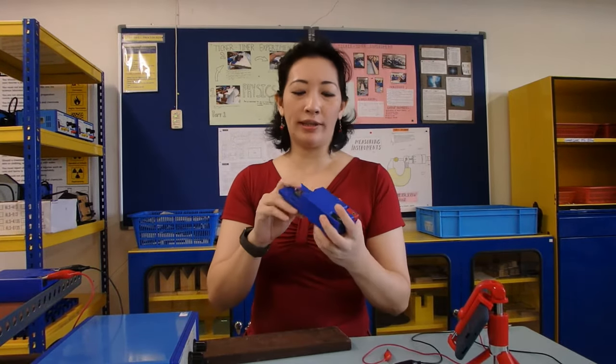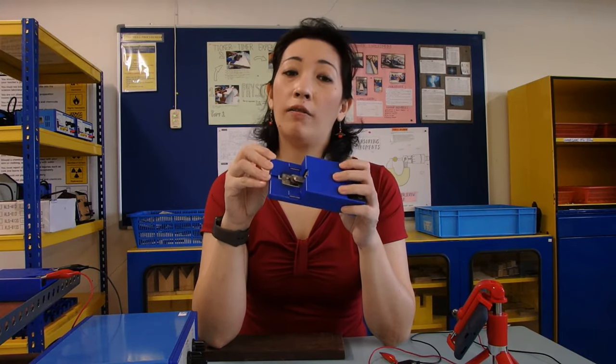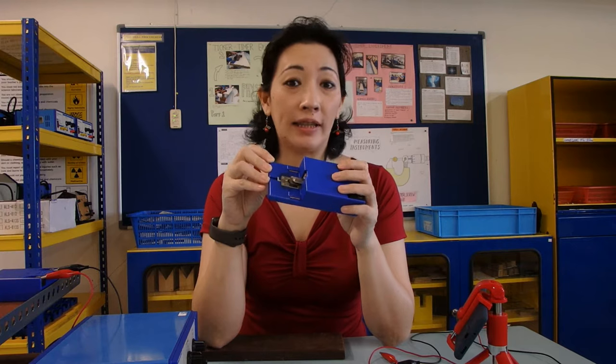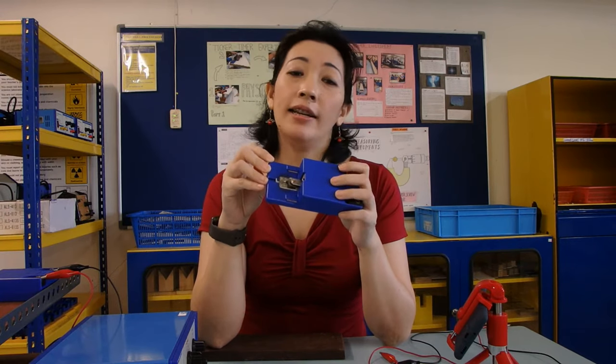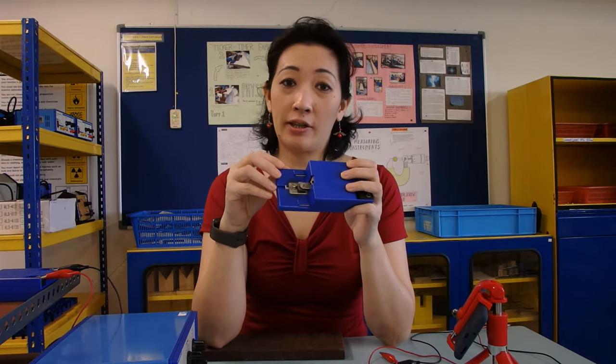If you're wondering, why does the frequency of the ticker timer follow the frequency of the alternating current? This is based on the principle of electromagnetism which you will learn in that particular topic. But to give you a rough overview so that those of you who are curious can find out more.